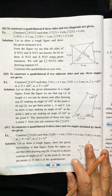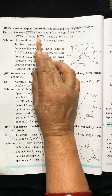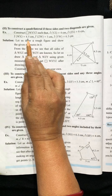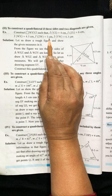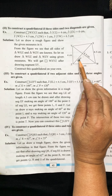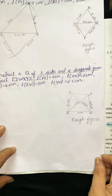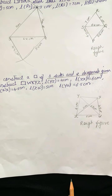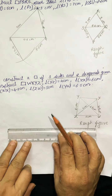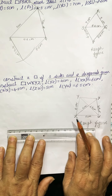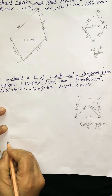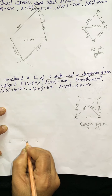3 sides and 2 diagonals are given. Construct quadrilateral WXYZ such that YZ = 4 cm, ZX = 6 cm, WX = 4.5 cm, WZ = 5 cm, and diagonal YW = 6.5 cm. Two diagonals are given. We will draw a rough figure and based on that we will construct the quadrilateral. I have already drawn a rough figure. Now, first let us draw ZW as 5 centimetres.